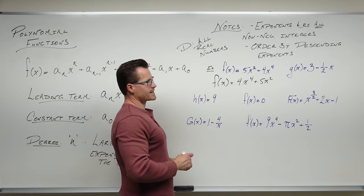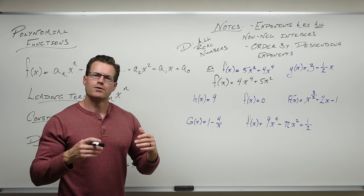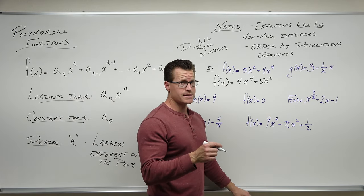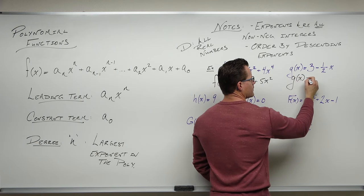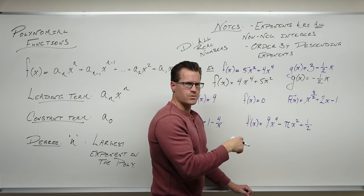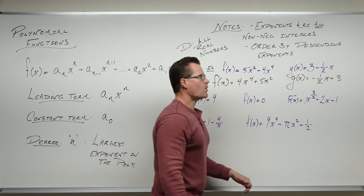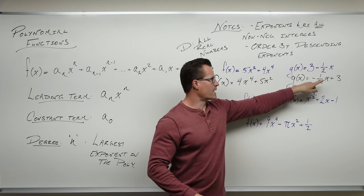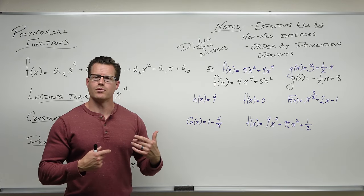How about g(x) = 3 − ½x? I see a fraction. Fractions are fine as long as they're not exponents. That right there is a polynomial, but it is out of order. When we write this in order, we need our x terms to come in front of our constants, and we take the sign of the term with it. So we get: −½x + 3. That's a polynomial.